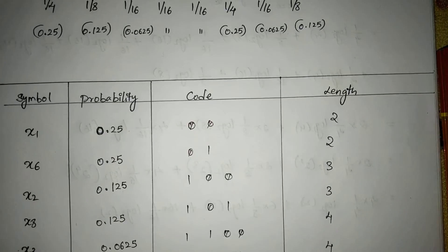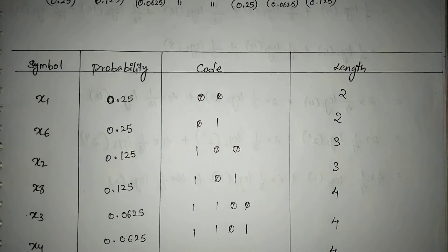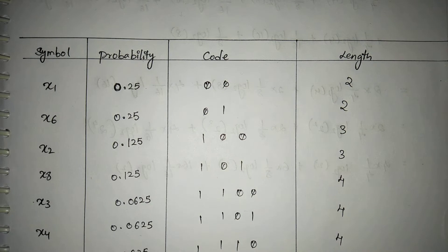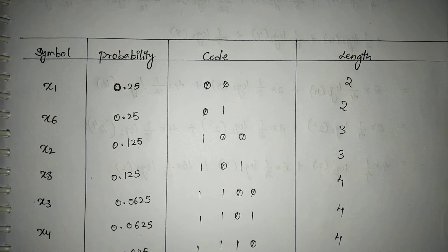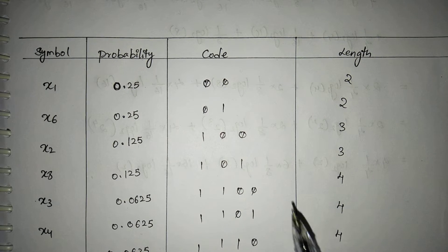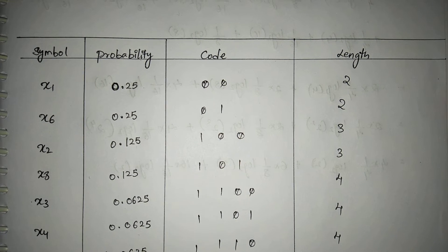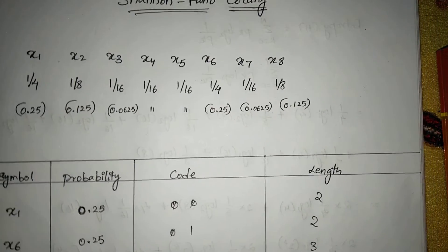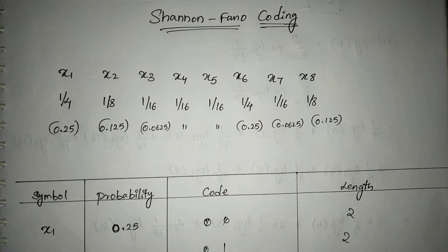So the table is complete: we arranged probabilities in descending order, divided into equal probabilities, assigned the codes, and noted the code lengths. Now we move on to finding the efficiency. To find efficiency we need to calculate the entropy and the average code length.